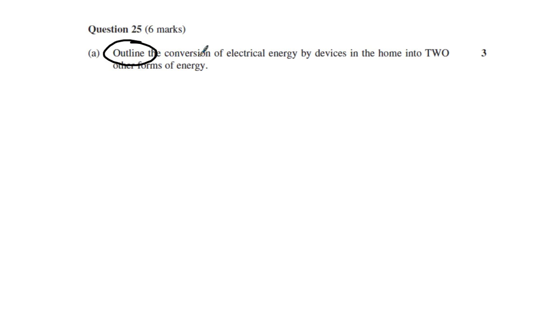The next part is conversion of electrical energy by devices—notice the plural there. More than one device is required. It needs to be in the home too, so there's no point raising industrial examples. Finally, it talks about two other forms of energy.